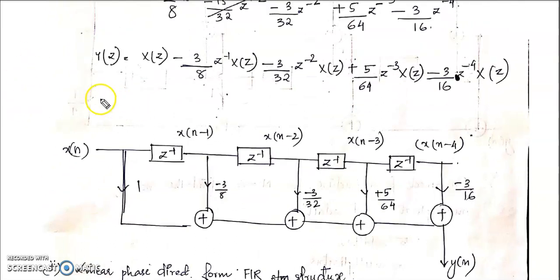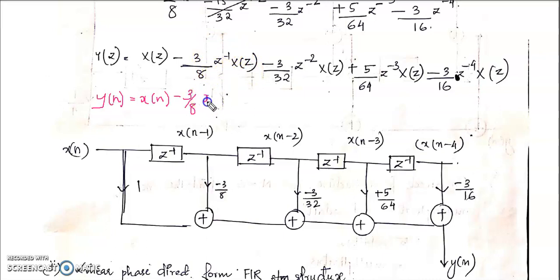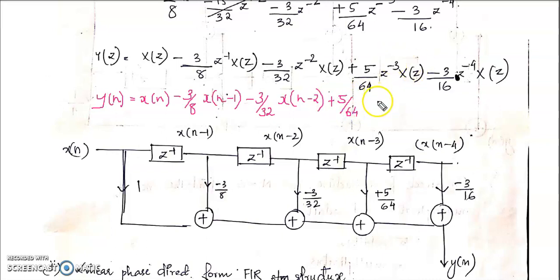Taking the inverse Z-transform: Y(N) = X(N) − (3/8)·X(N−1) − (3/32)·X(N−2) + (5/64)·X(N−3) − (3/16)·X(N−4). A 1-unit delay gives X(N−1), 2-unit delay gives X(N−2), 3-unit delay gives X(N−3), and 4-unit delay gives X(N−4). We can realize this expression using 4 delay elements.